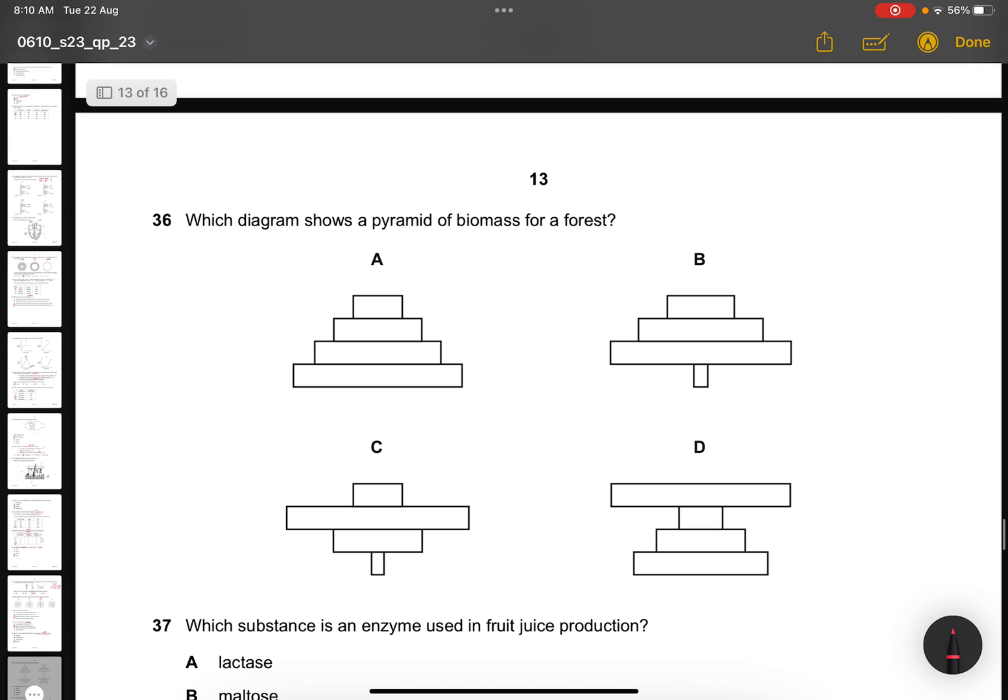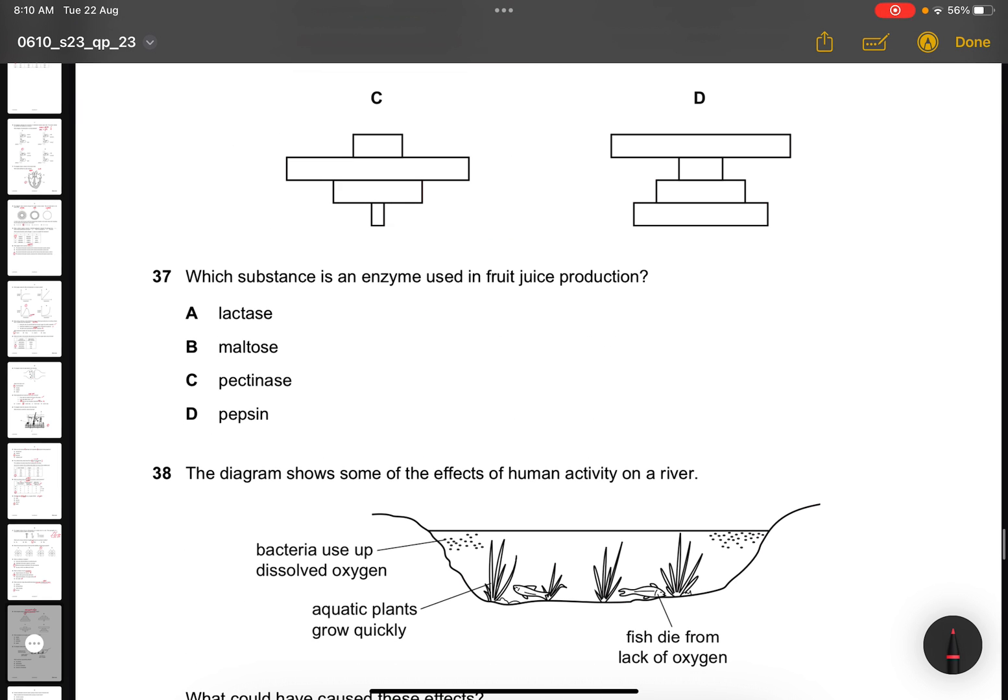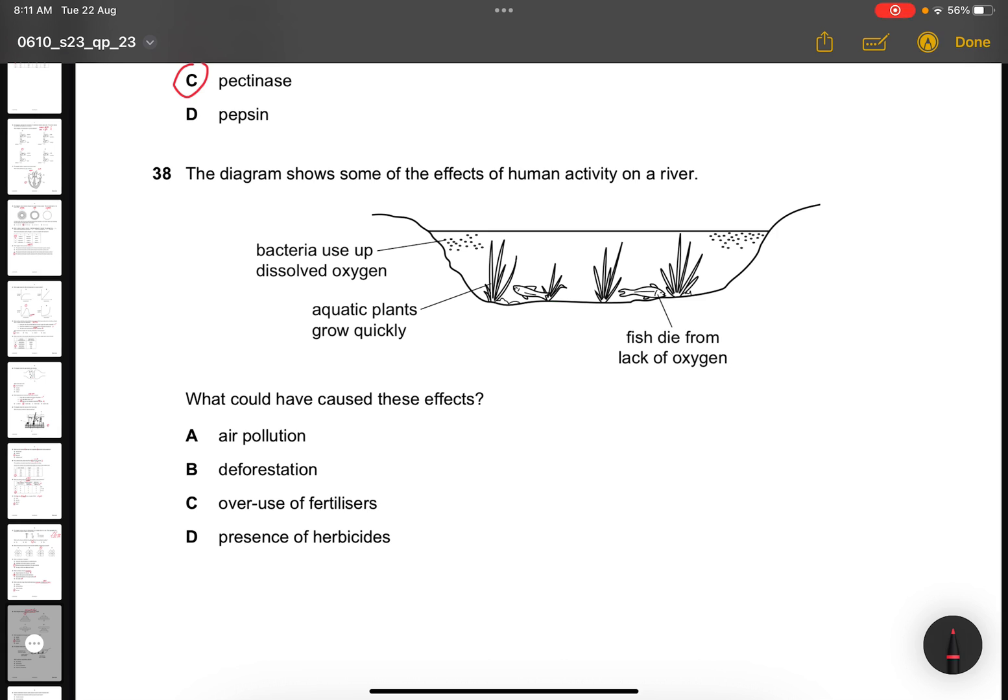Question 36. Which diagram shows the pyramid of biomass for a forest? Pyramid of biomass is always pyramid shape. This is very fixed. They just want you to know what is the pyramid of biomass. So the answer is A. Question 37. Which substance is an enzyme used in fruit juice production? Pectinase. Question 38. The diagram shows some of the effects of human activity on the river. This is eutrophication. What could have caused these effects? The overuse of fertilizer. So the answer is C. It's a process of eutrophication.